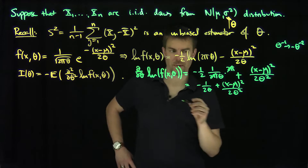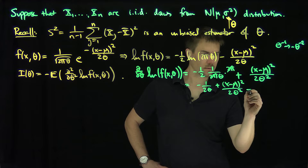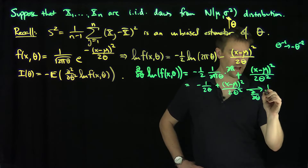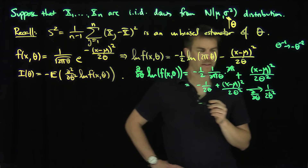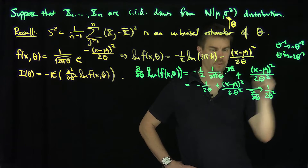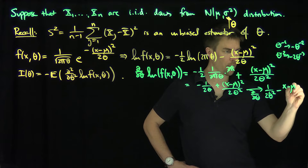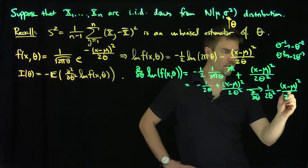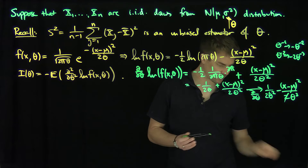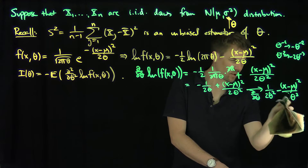Now for the second theta-derivative. Differentiating −1/(2θ) gives 1/(2θ²). Differentiating (x−μ)²/(2θ²) with respect to θ: θ⁻² differentiates to −2θ⁻³, so the 2's cancel and we get −(x−μ)²/θ³. So the second derivative is 1/(2θ²) minus (x−μ)²/θ³.